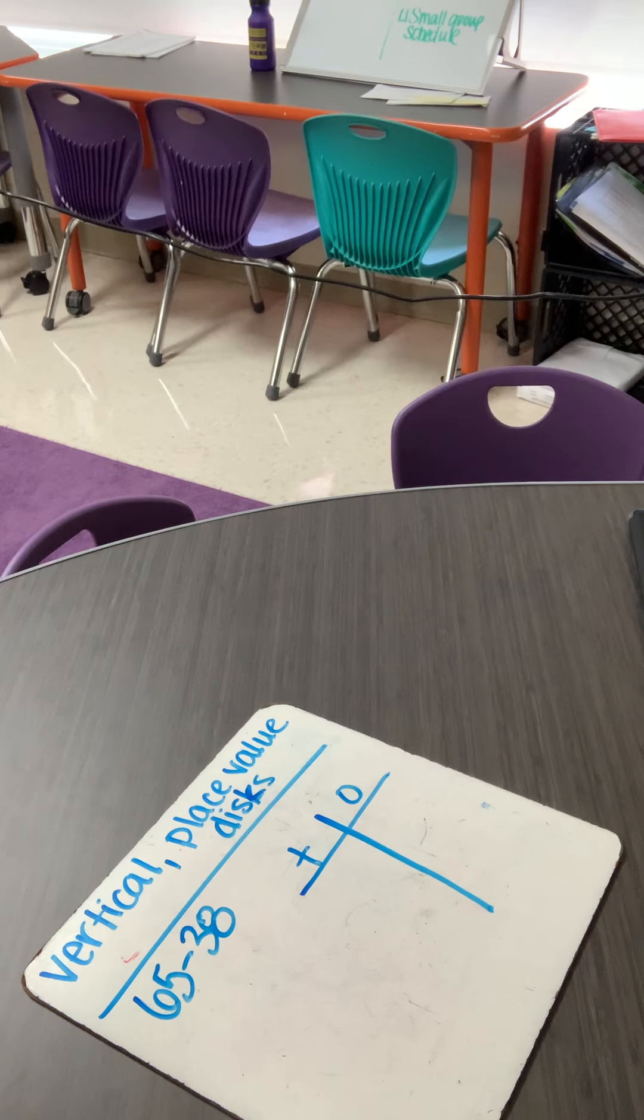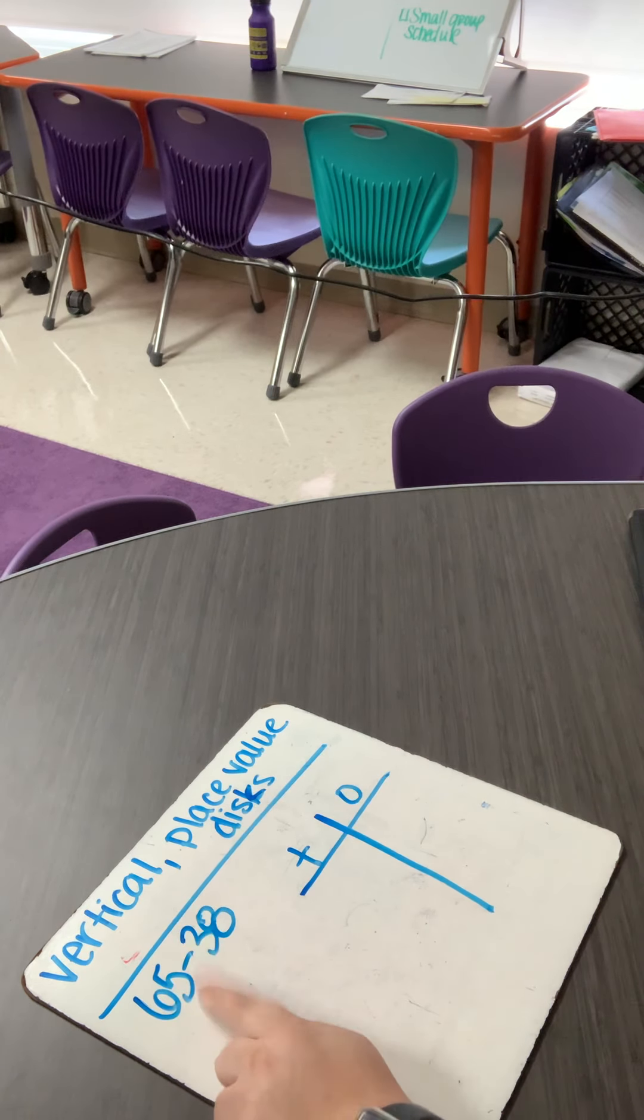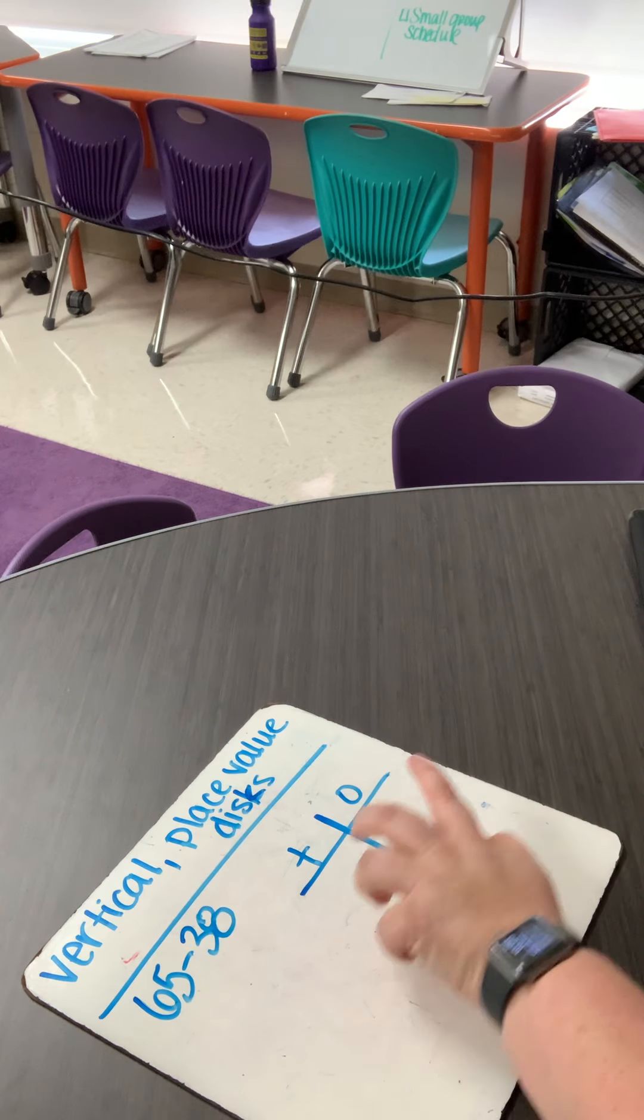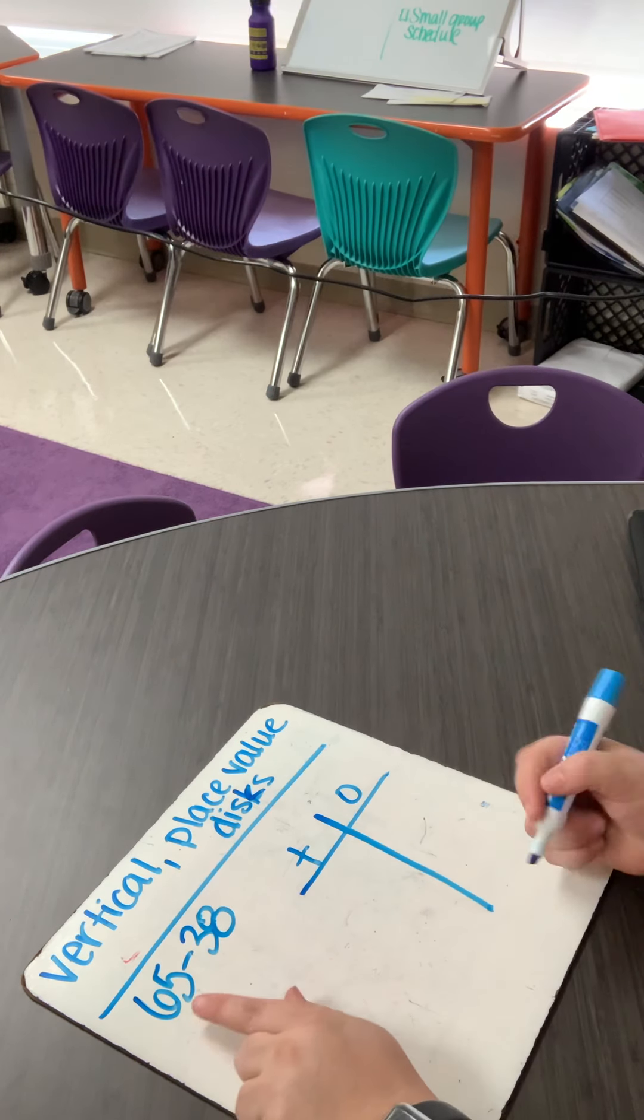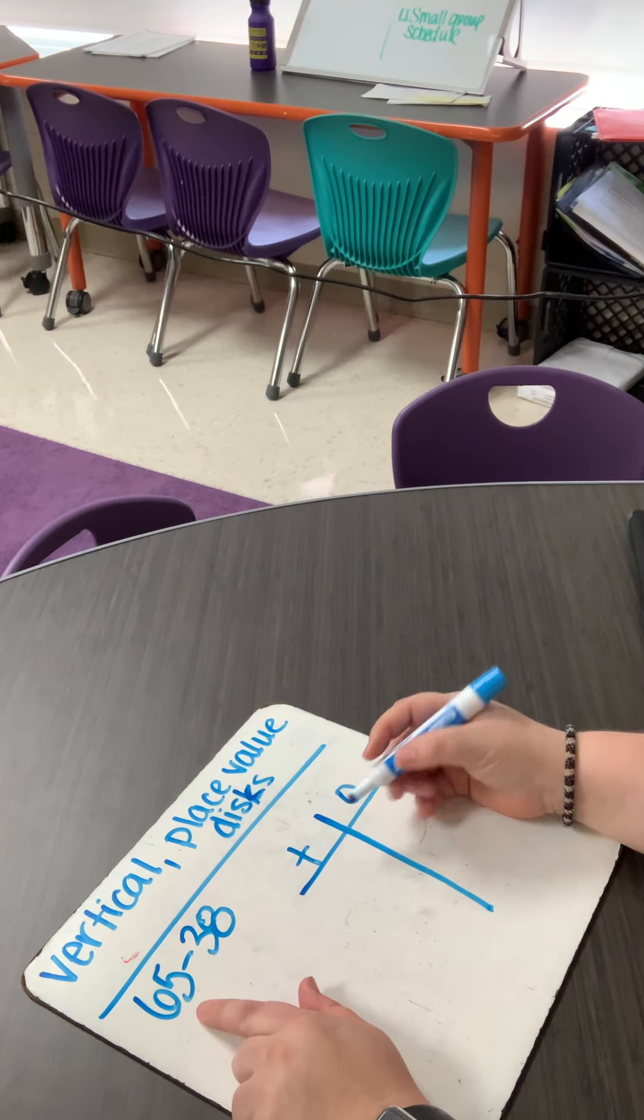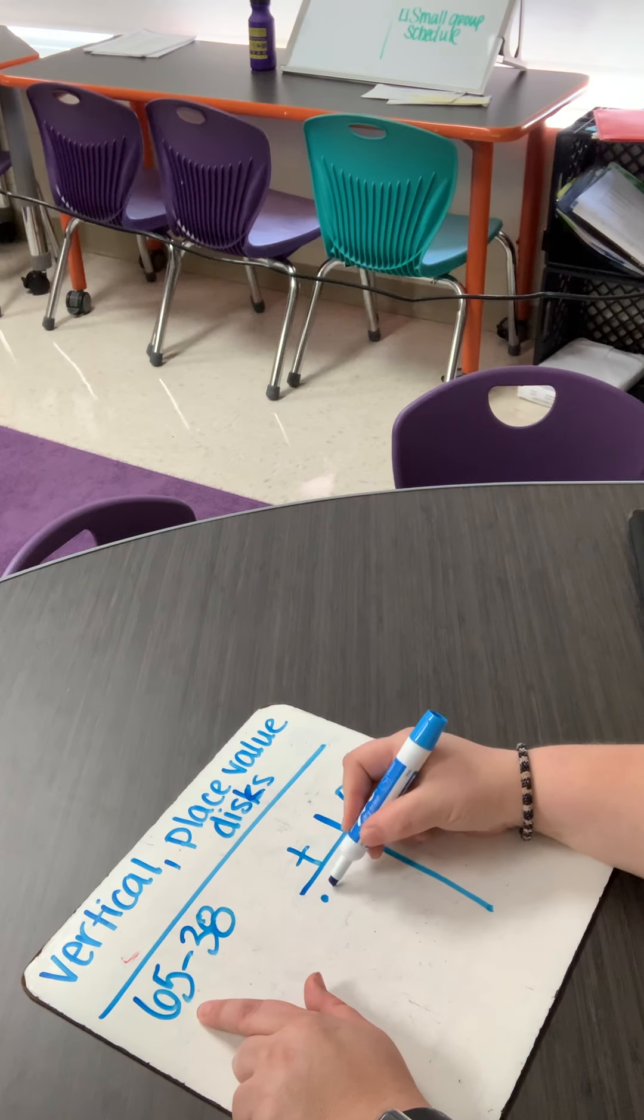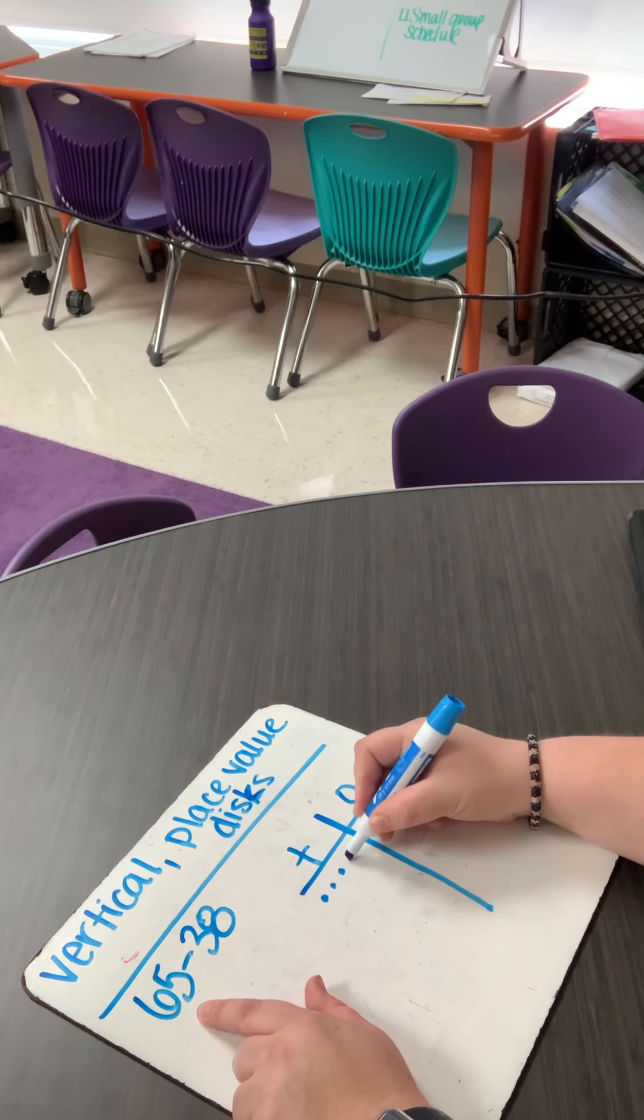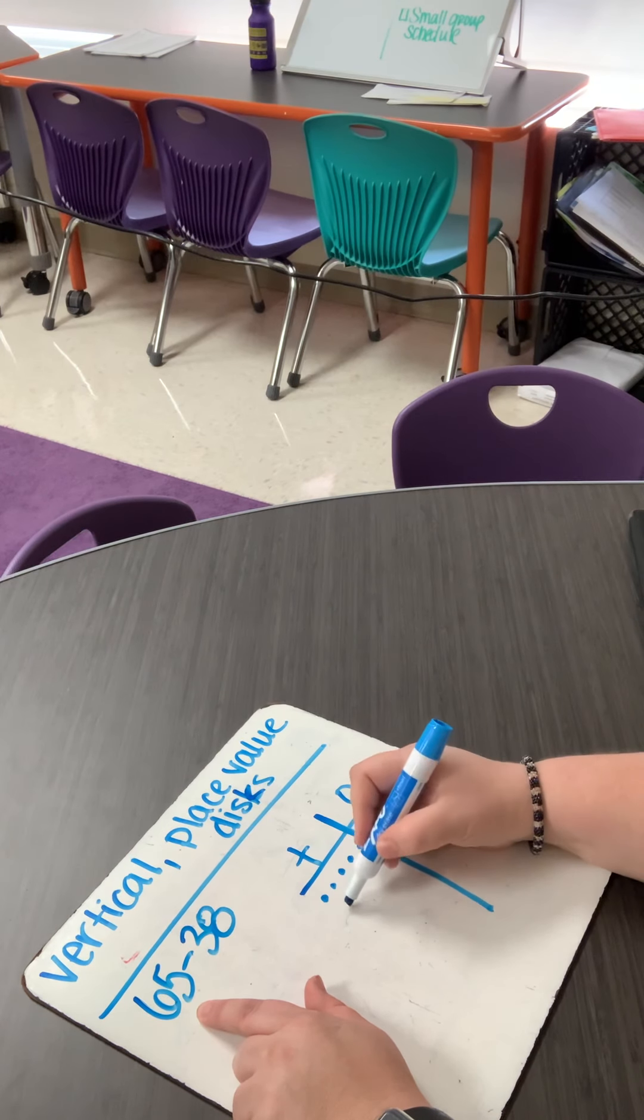And what I'm going to do is write my big numbers here first. Okay. So I'm going to do it in our disks, which are our dots. So if I have six tens, that's one, two, three, four, five, six.